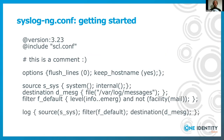Here is how a configuration looks. We always start with a version number, some general options at the beginning, and then you can see building blocks: a source collecting local messages, a file destination, and a filter typical for /var/log messages. At the bottom of the screen, there is a log statement connecting all of these building blocks together.